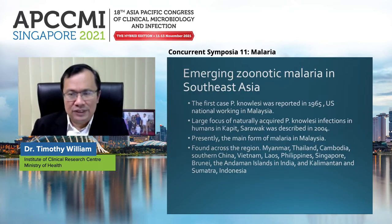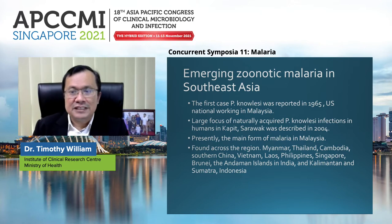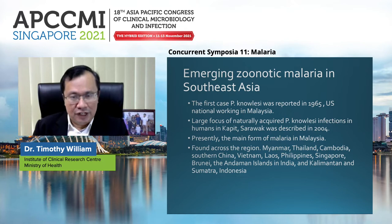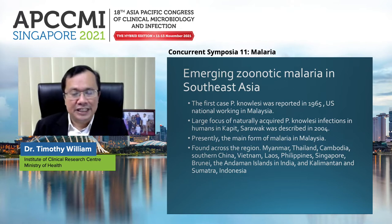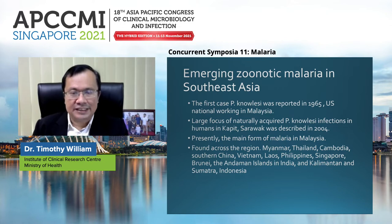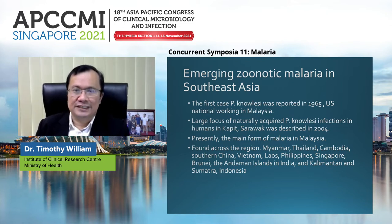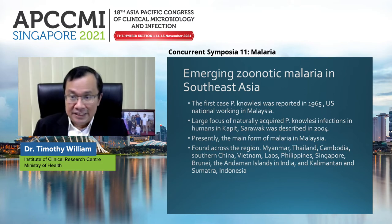Plasmodium knowlesi is an emerging zoonotic malaria disease in Southeast Asia. The first case of Plasmodium knowlesi was reported in 1965. It was found in a U.S. national who was working in Malaysia at that time. Since then, a large focus of naturally acquired P. knowlesi infections was found in humans in Kapit, Sarawak, and it was very well described in 2004 by Professor Balde-Singh's team.